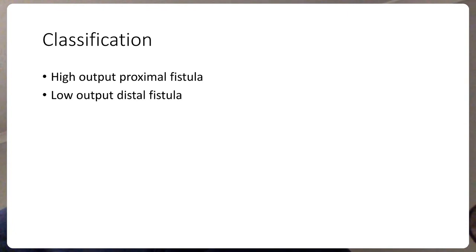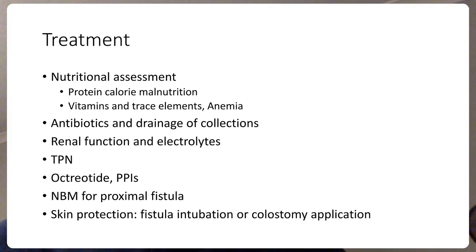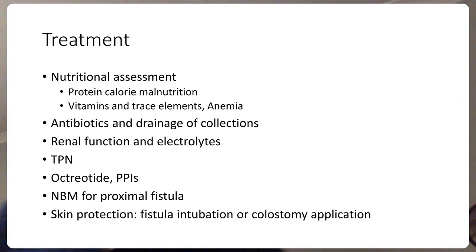Low-output fistulas can be managed outside the hospital, but high-output fistulas require hospital admission for more intensive treatment. For high-output fistulas, the first step is to rehydrate the patient and correct electrolyte disorders. We then feed them, usually via parenteral nutrition — TPN — which provides protein, calories, vitamins, iron, and trace elements to address malnutrition. Often these patients are anemic and may need a blood transfusion. They may also show evidence of sepsis with undrained collections, which must be addressed with antibiotics and CT-guided drainage.